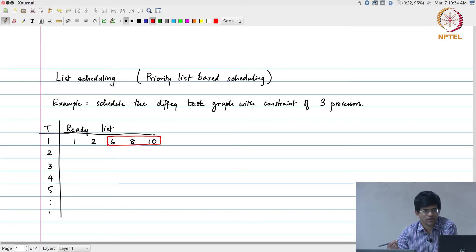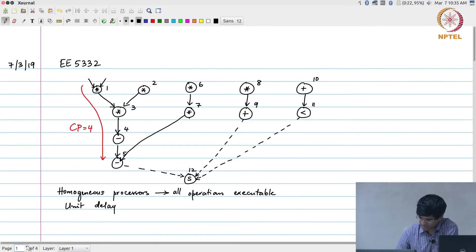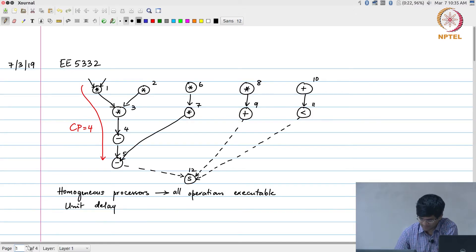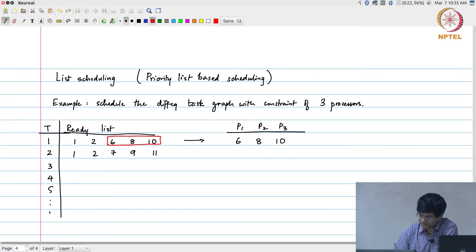If I did not have such a priority list and all I had was that everything that is ready has the same priority, I could have picked 6, 8, and 10 as the operations to be scheduled. What that implies is that 6, 8, and 10 will get executed in time step 1. Now what is the ready list in time step 2? 1 and 2 remain there. Because 6 has executed in step 1, now 7 is ready; because 8 has executed, 9 is ready; because 10 has executed, 11 is ready. Once again nothing really preventing me from picking these.